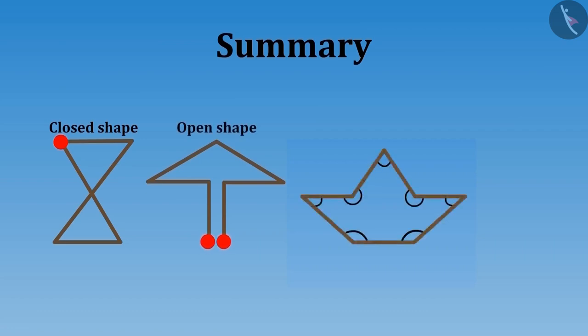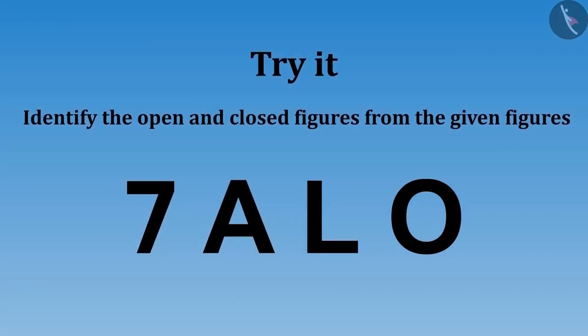And we also saw an example of making a new shape by changing the angles of the shape. Can you tell which of the following shapes are open and which are closed? Which have angles and which do not? Just think.